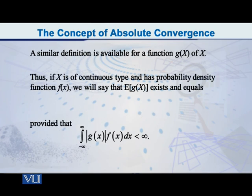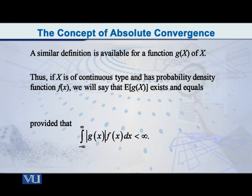Whatever I just said for a single variable X, a similar logic applies for a function of the random variable X. So if g of x represents a function of x, then we say that the expected value of g of x exists and it equals the integral of g of x times f of x — for a continuous variable — provided that the integral of the absolute value of g of x multiplied by f of x is less than infinity. You have seen this is exactly an extension of what was before. Now I am in a position to discuss the expected value of a function of two random variables x1 and x2.